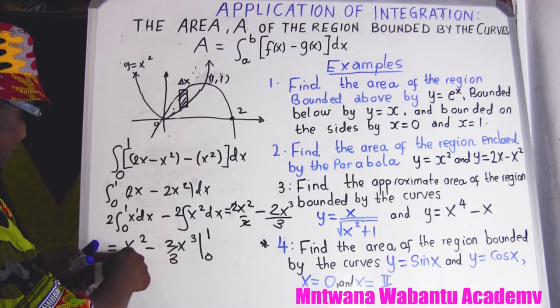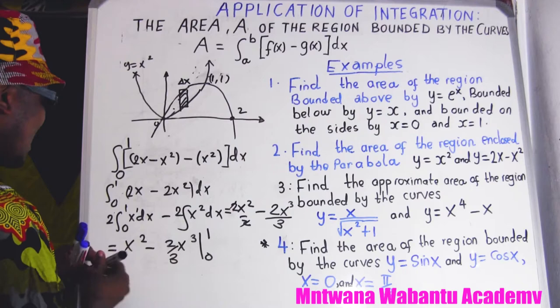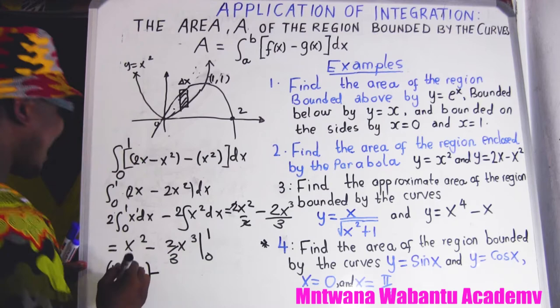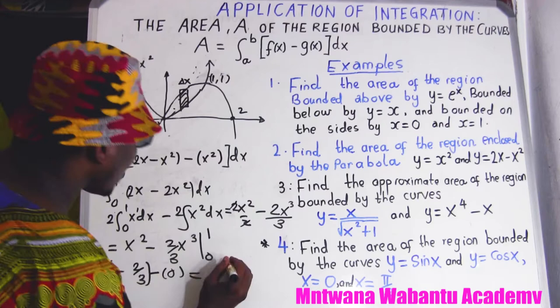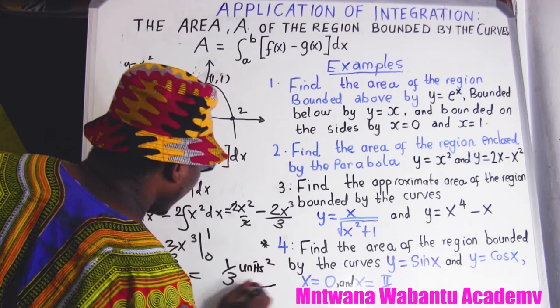Substituting the lower limit zero gives zero for both terms. So the area equals one minus two thirds equals one third unit squared. For area we say unit squared; for volume we would say unit cubed.